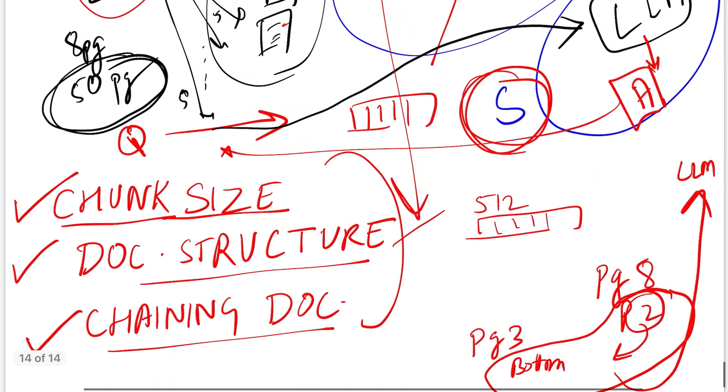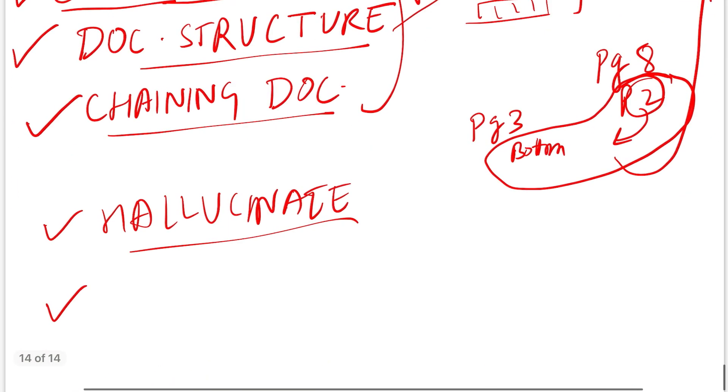The second thing that comes on the engineering end: let's say you retrieved n number of documents. By the way, deciding how many chunks to return is also a good parameter that you need to take care of for generating good answers.